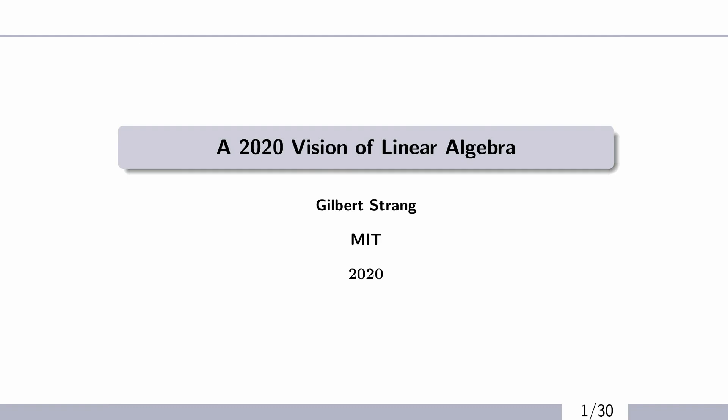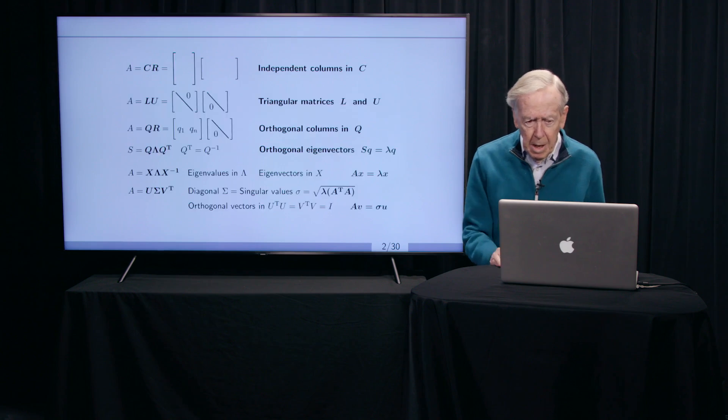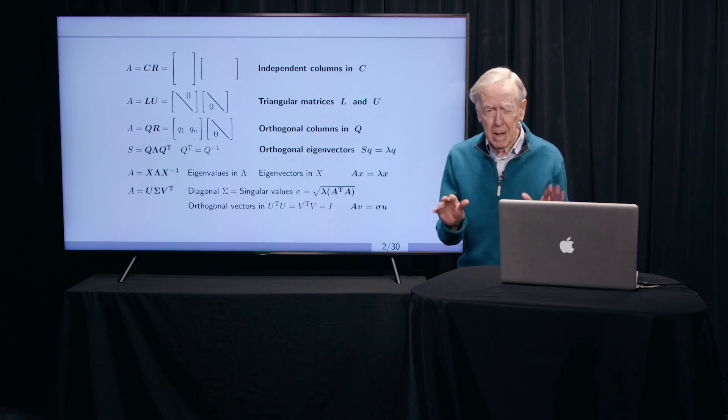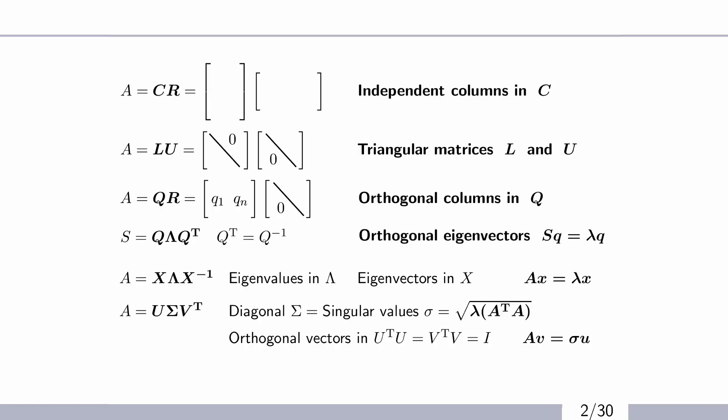And then you've seen in these six pieces as a sort of look ahead. And I'm going to start on that first piece, A equals CR. That's the new way I like to start teaching linear algebra. And I'll tell you why.